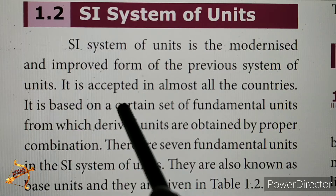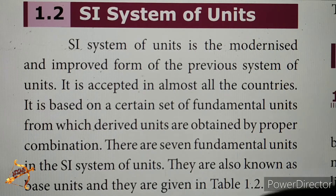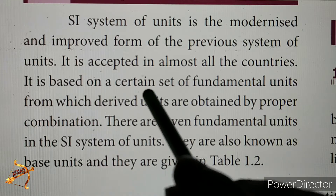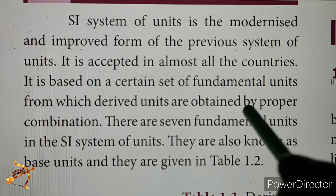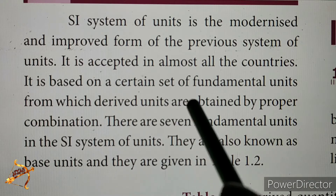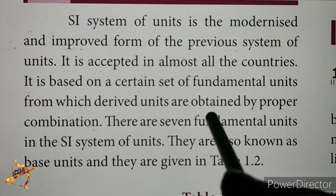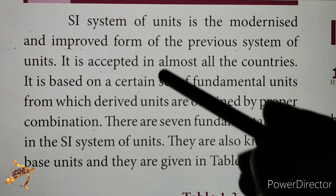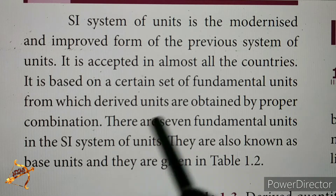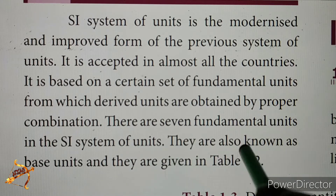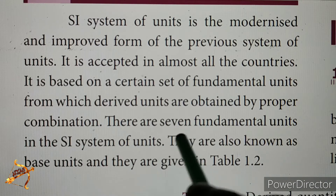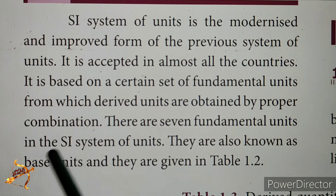The SI system is accepted in almost all countries. It is based on a certain set of fundamental units, from which derived units are obtained by proper combination. There are seven fundamental units in the SI system of units, also known as base units, and they are given in the table.